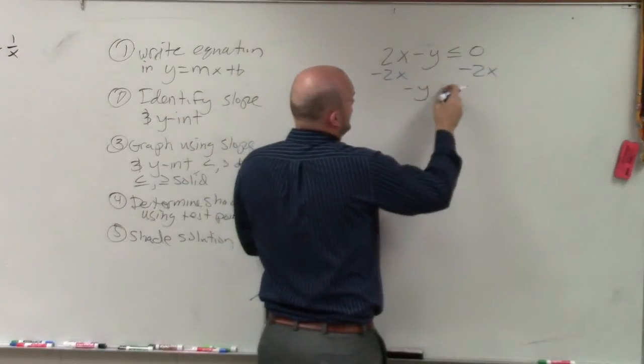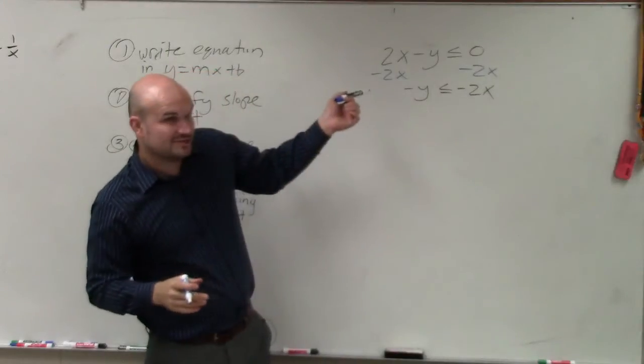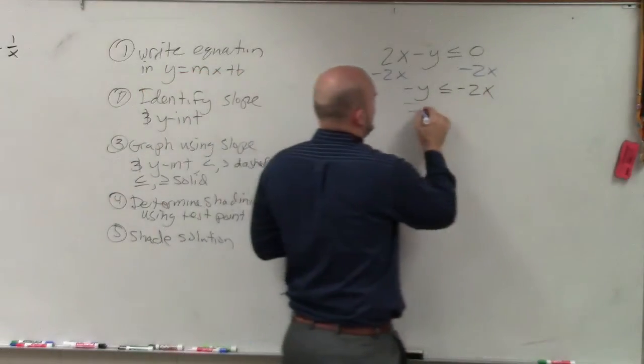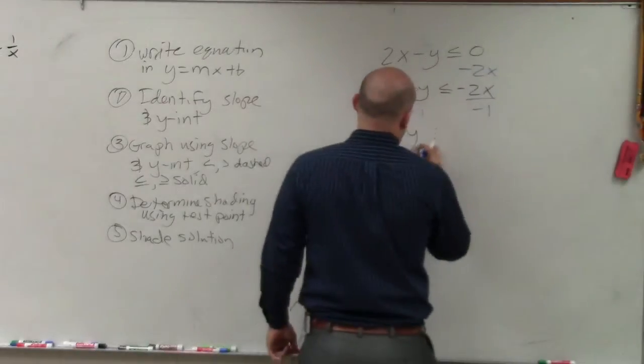So I have negative y is less than or equal to negative 2x. Then I need to solve for positive y, so I'm going to divide by negative 1. By doing that, I have y.